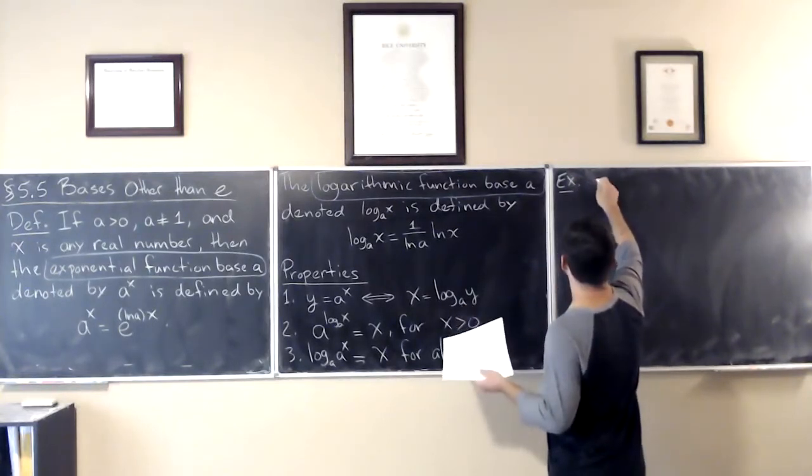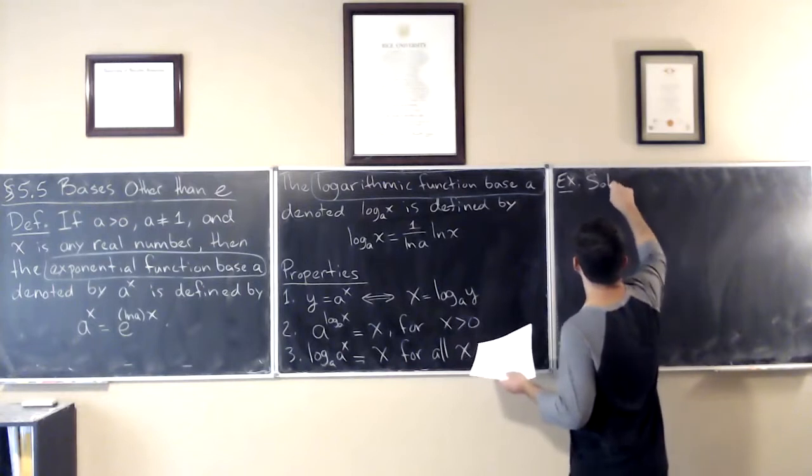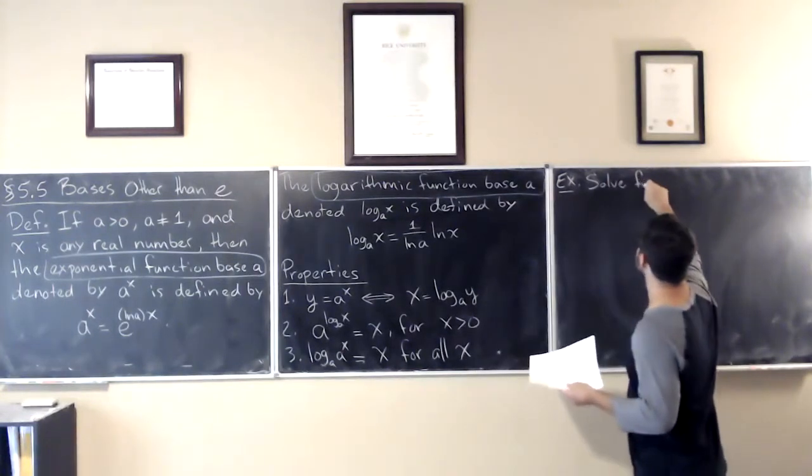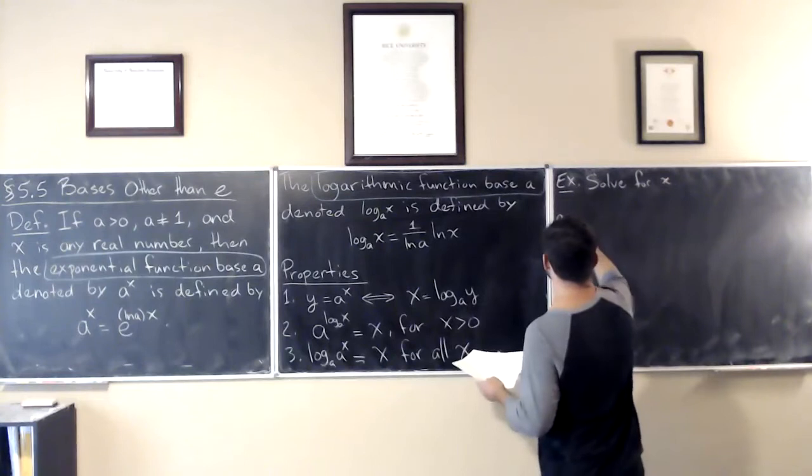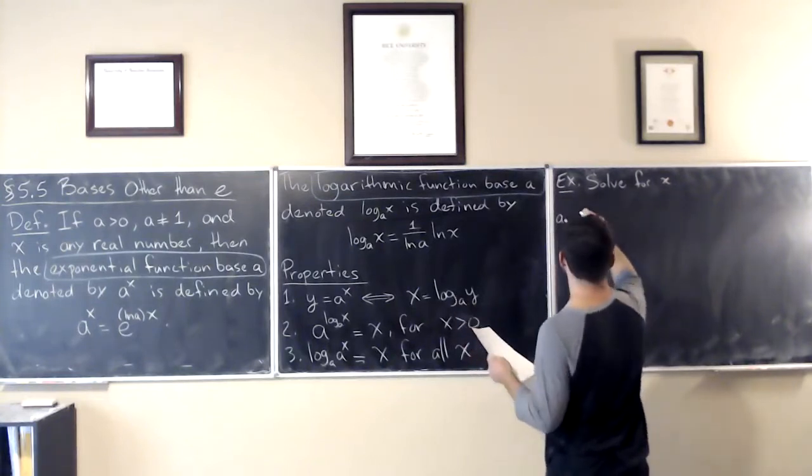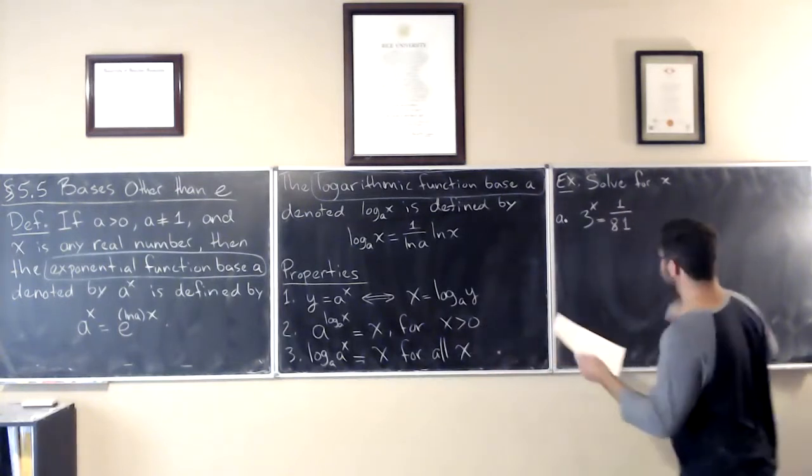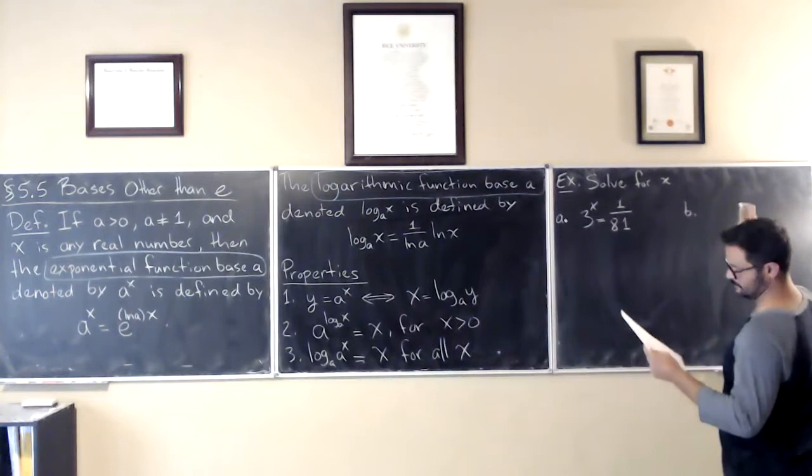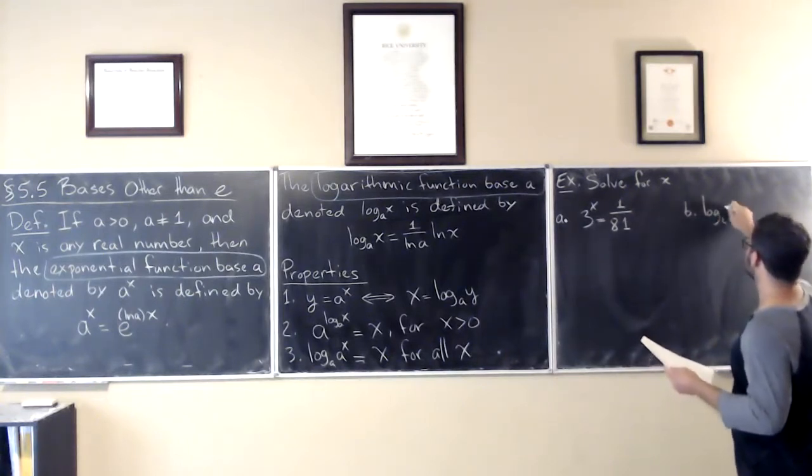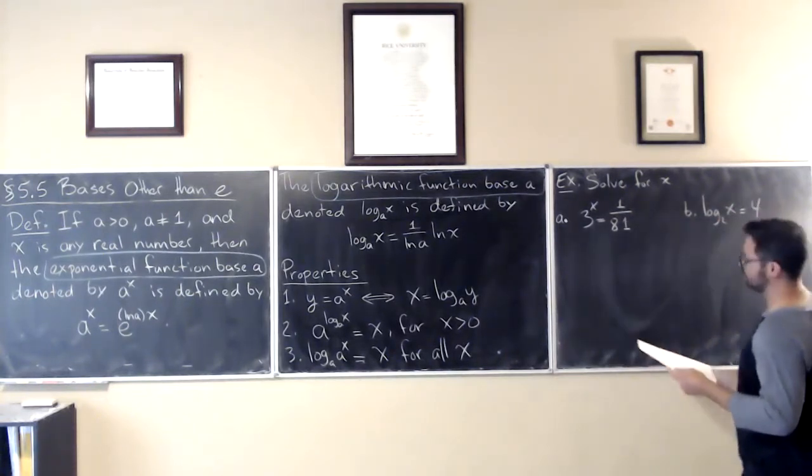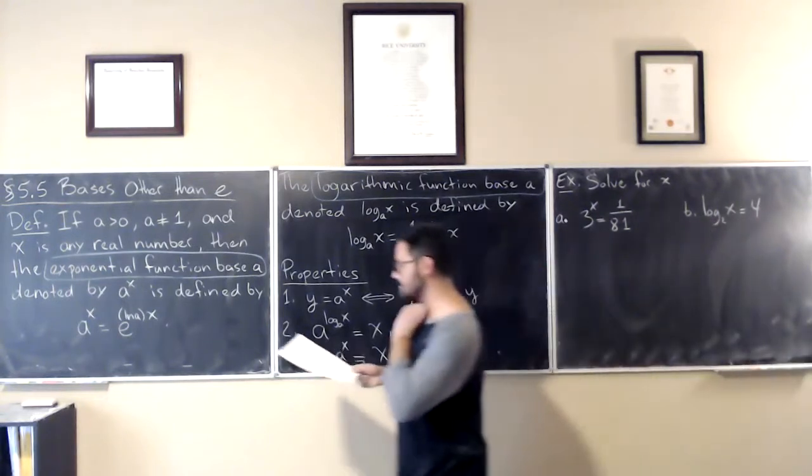So, solve for x in the equations. Part a: 3 to the power of x equals 1 over 81. And also log base 2 of x is equal to negative 4.